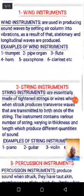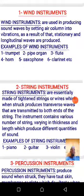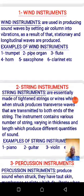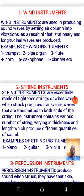Wind instruments are used in producing sound waves by setting the air column into vibration. When you blow the column, there will be a vibration in the column of such an organ, pipe, or whatever material you are using. As a result of blowing into such a wind instrument, you will observe that stationary and longitudinal waves are going to be produced.